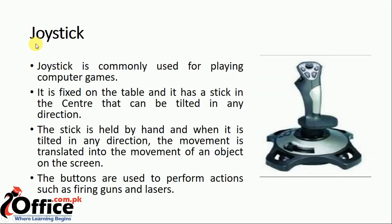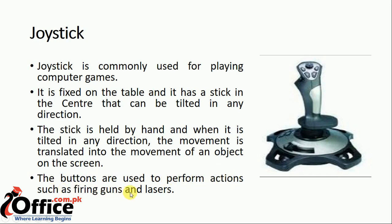The next pointing device is the joystick. A joystick is commonly used for playing computer games. It is fixed on the table and has a stick in the center that can be moved in any direction. The stick is held by hand, and when it is moved in any direction, the movement is translated into the movement of an object on the screen. The buttons are used to perform actions such as firing guns and lasers.